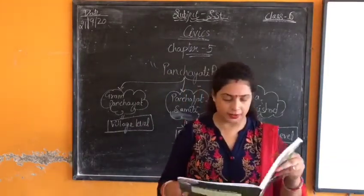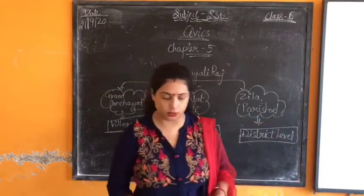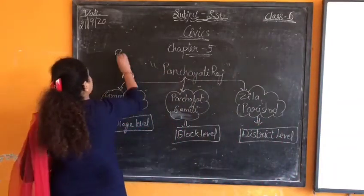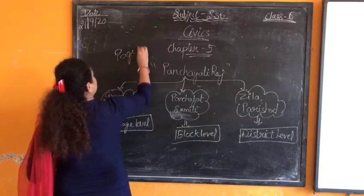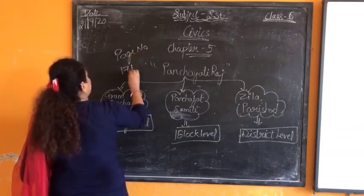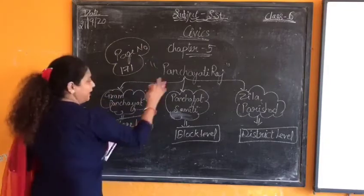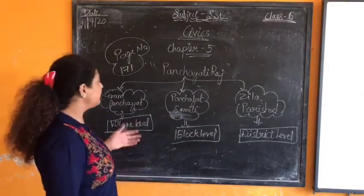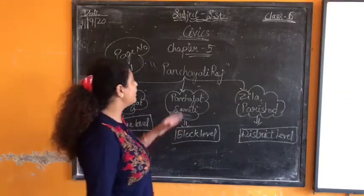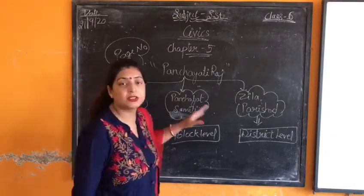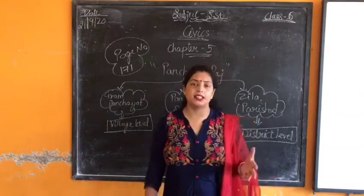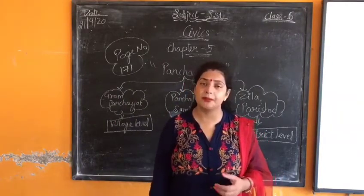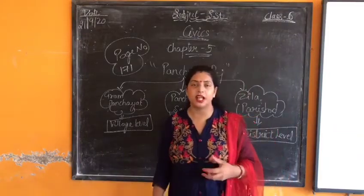When you open page number 171, the topic is on page number 171. I have made a chart for you so that I can explain easily. First I will introduce you to Panchayati Raj. So we have a list of names for that. We have understood the gap where the government is divided into three parts.